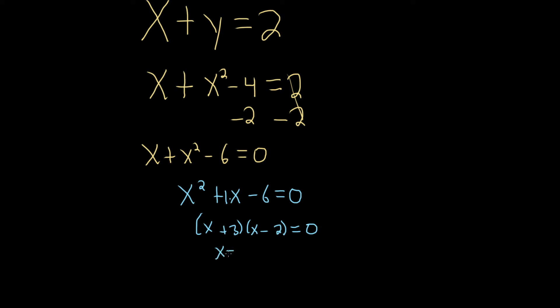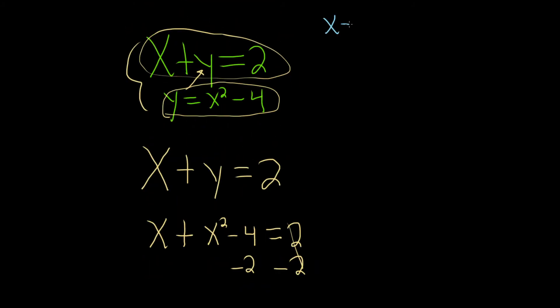So we get two possible values for x here, negative 3 and 2. These are our possible x values. So now what we're going to do is find the y values. So I'm going to go back up here to the original, and I'm going to write our x values. We had negative 3 and we have 2.